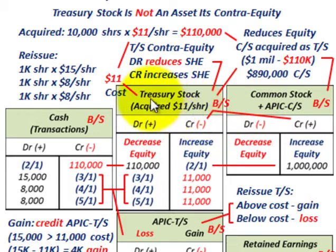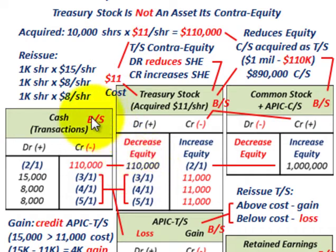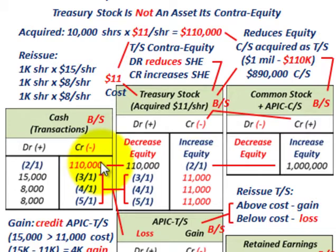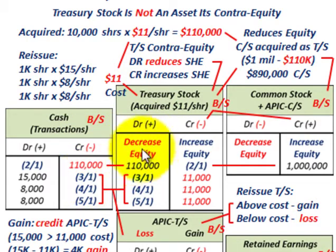Treasury stock is repurchased common stock. For the $110,000 we bought back, we debit our treasury stock account for $110,000 and credit our cash account for $110,000. So now we have this treasury stock — it's a contra equity account, not an asset on our balance sheet. Now we're going to go out and reissue this treasury stock.